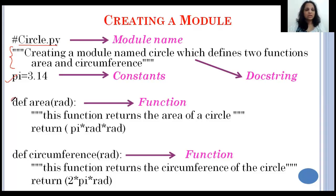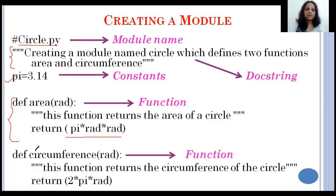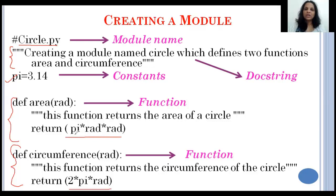What you see here is a function. This one calculates and returns the area of a circle with the formula shown. Similarly, I've written another function which calculates the circumference of a circle. Notice I did not write 3.14 directly — instead I wrote pi, because pi is already defined in the module as 3.14.